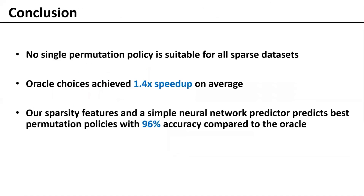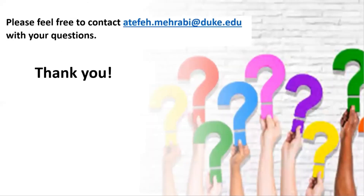In summary, none of the permutations alone were sufficient for all matrices, but the combinatorial choice among multiple policies can lead to significant gains if selected properly. The predictor we proposed simplifies this challenging choice using an easy, smart, and highly accurate model. Thank you for your attention.